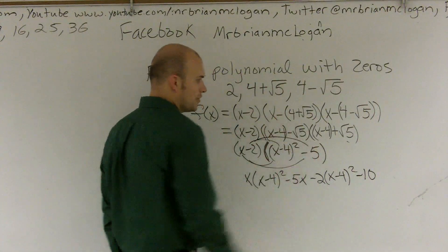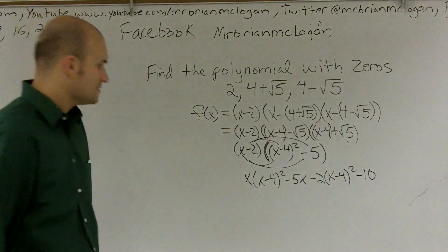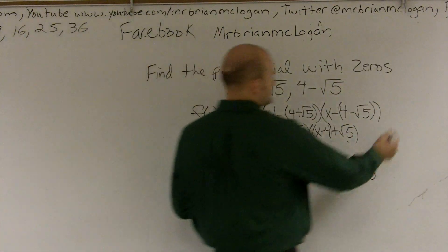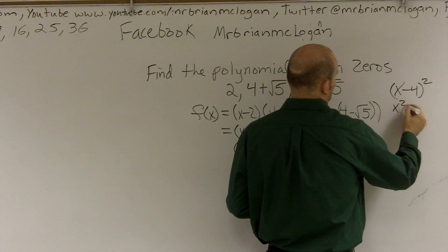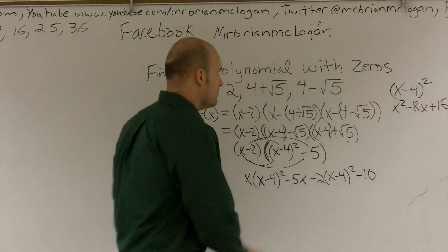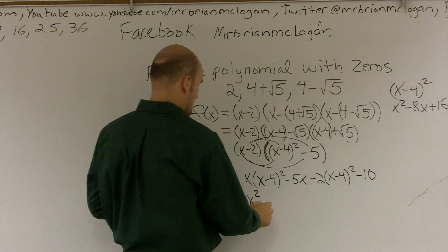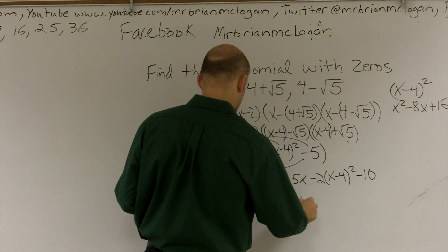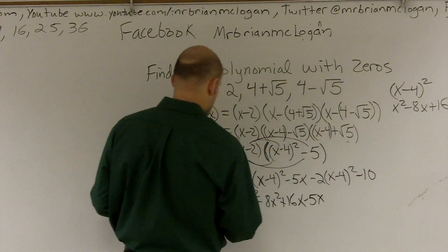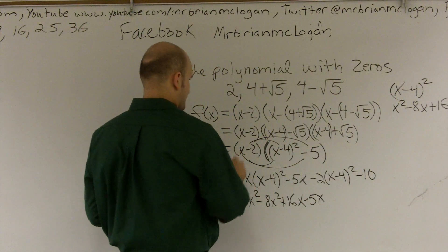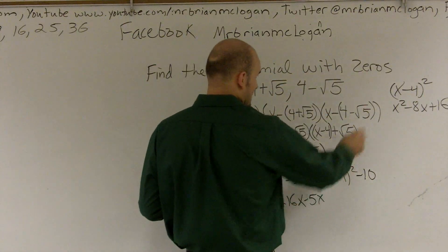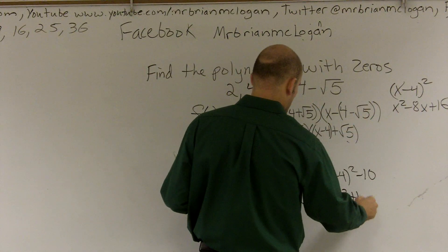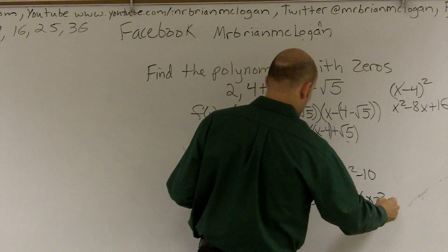Do a little factoring. Or I'm sorry, not factoring, but foiling, right? It gets a little messy. I need to make sure I do x minus 4 squared. So x minus 4 squared. Multiply that by x. I'm going to get x cubed. Then I'll get minus 8x squared plus 16x minus 5x. And then I have negative 2 times x squared is a negative 2x squared. Negative 2 times negative 8 is a positive 16x. And negative 2 times 16 is a negative 32.